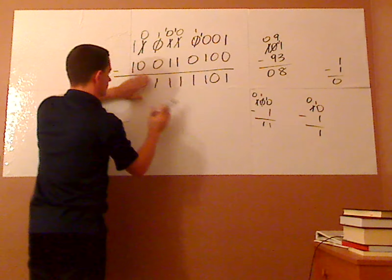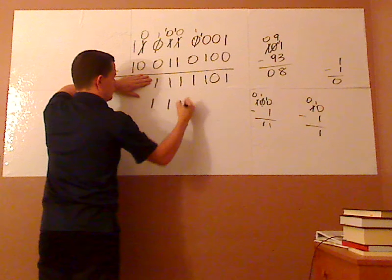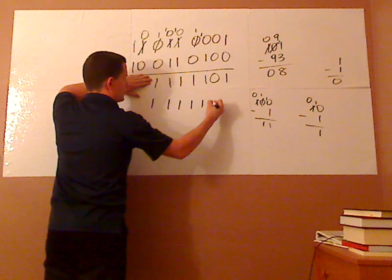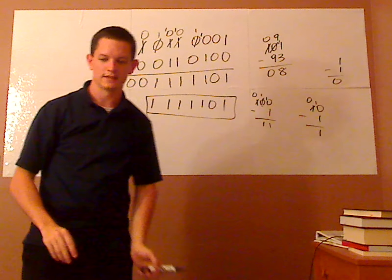So your final answer, I'm going to drop these 0's right here so you can see it, is 1, 1, 1, 1, 1, 1, 0, 1. And that's it.